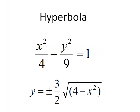Next, we graph the hyperbola. Similar to the ellipse, it's not a function, but it does have an upper half and a lower half. Solving for y, we find that y equals plus or minus 3 halves times the square root of x squared minus 4. So the upper half is y equals 3 halves times the square root of the quantity x squared minus 4, and the lower half is minus 3 halves times the square root of the quantity x squared minus 4.